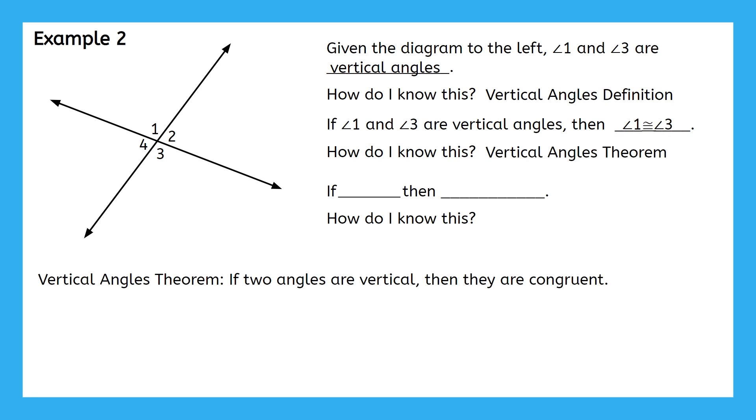You'll find that this is a very consistent pattern throughout this unit. Whenever you want to make a statement about the relationship between two angles or segments, you'll first need to state a definition that lets you label them. And then you can use a theorem or postulate that allows you to state their relationship.